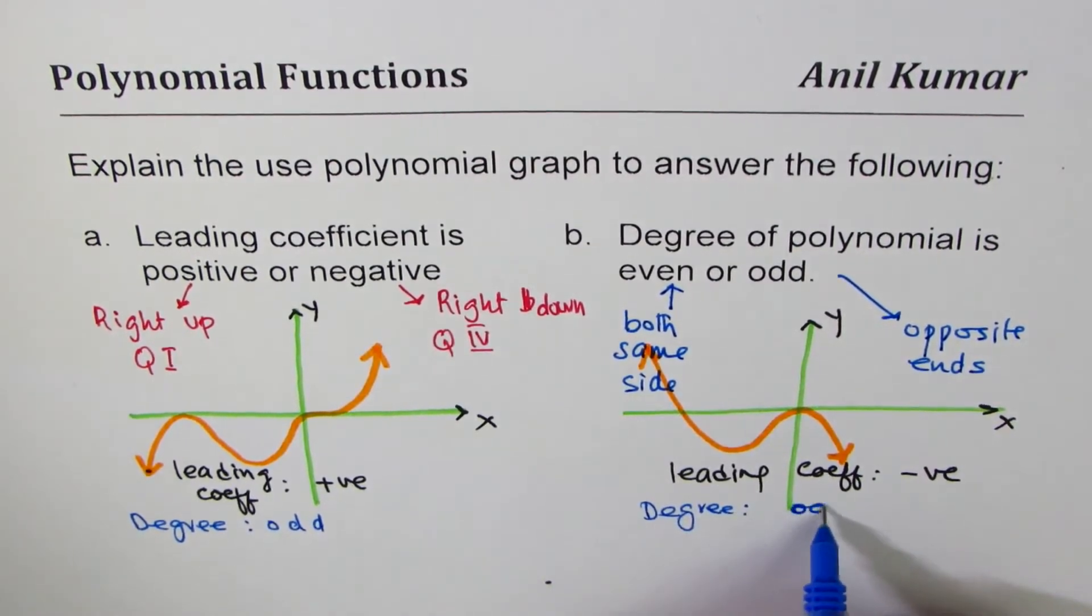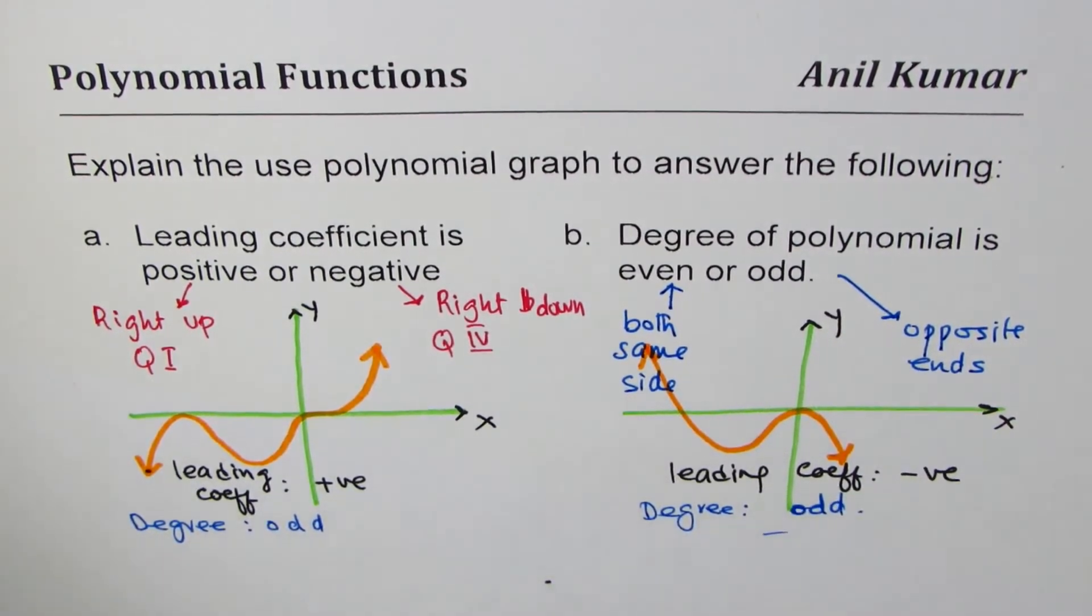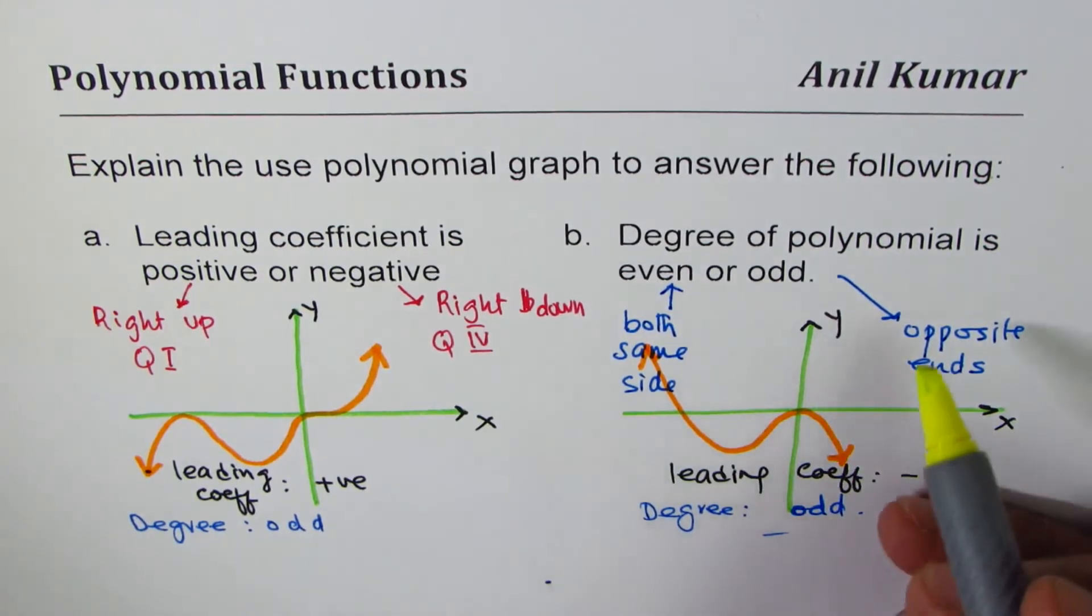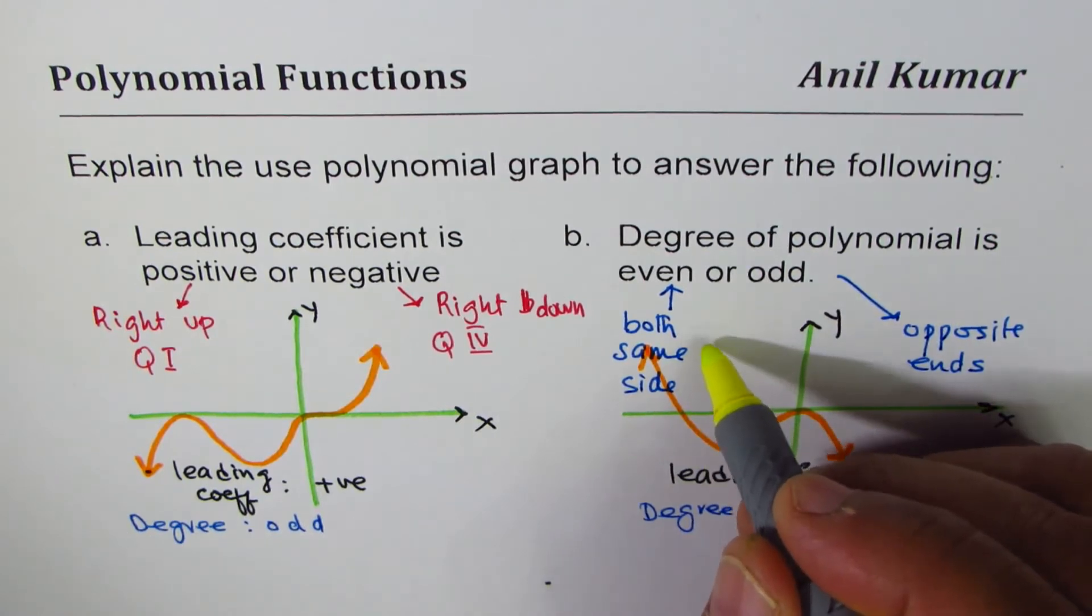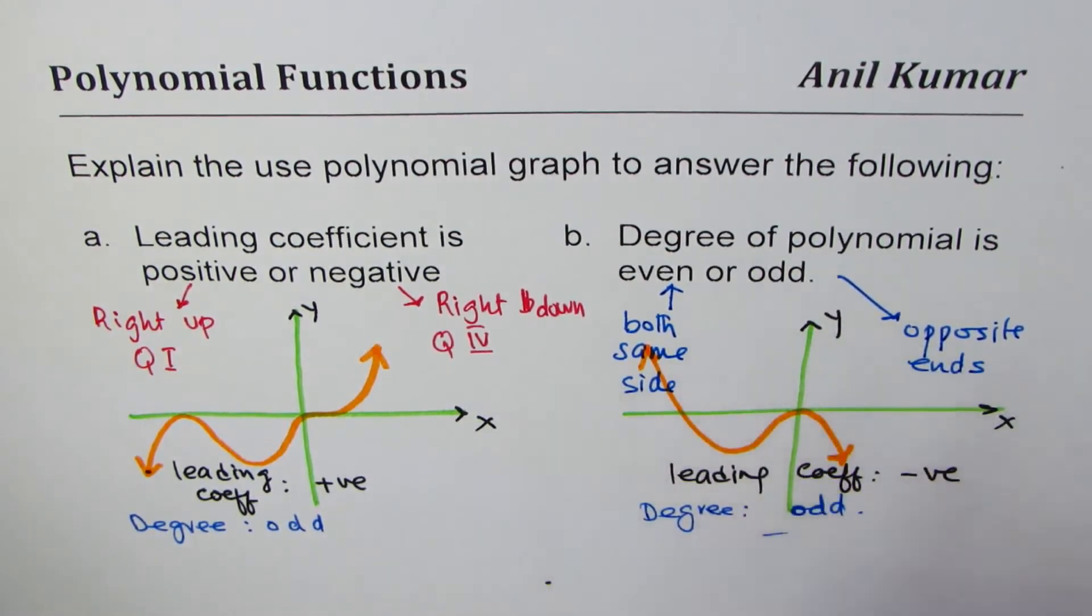Degree is odd. So for the given graphs, both of them, the degree is odd since they are moving from 3 to 1 or from 2 to 4, that is opposite ends. If you need to sketch a polynomial whose degree is even, for example, then it could be like this. Well, let me make up a question first.